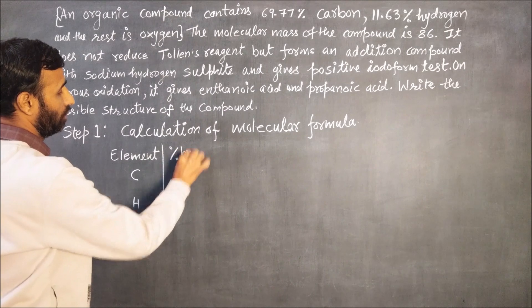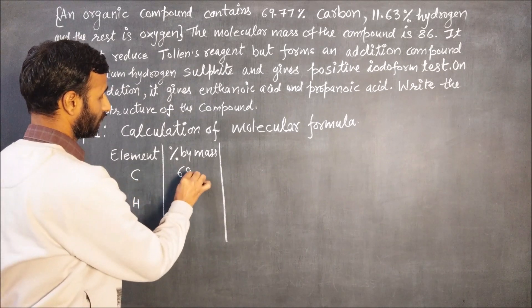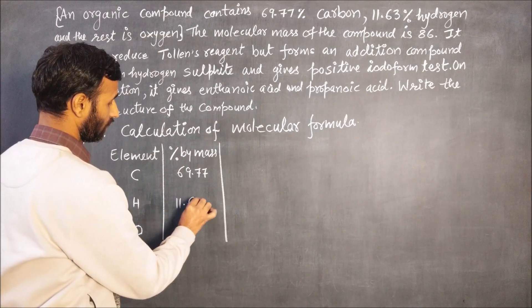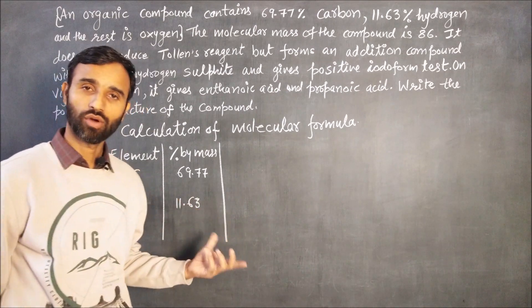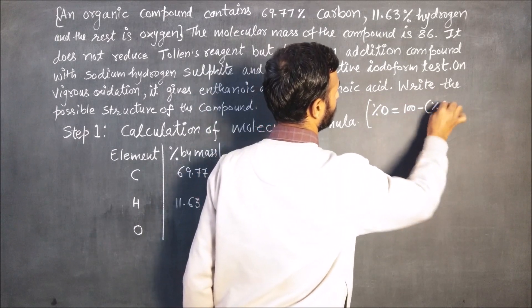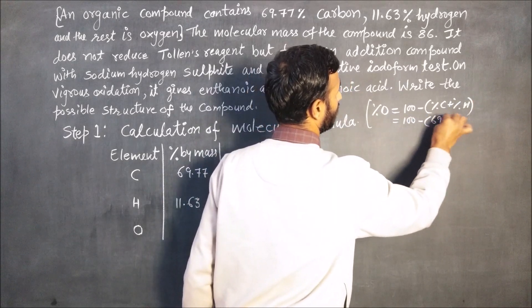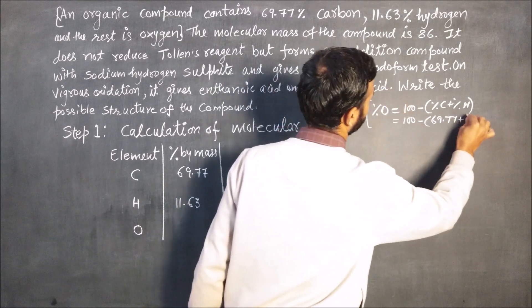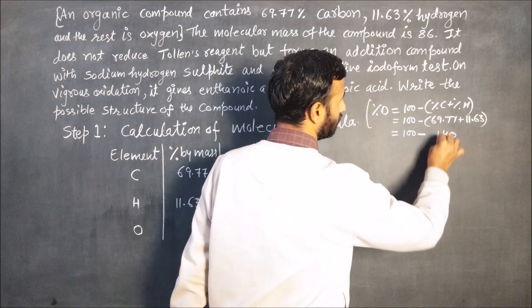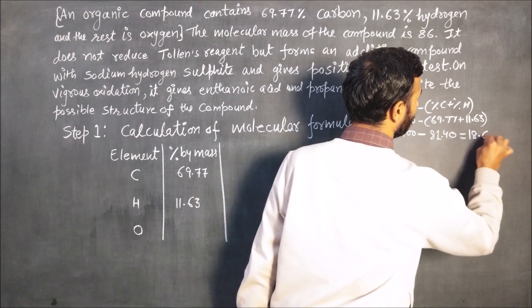Percentage by mass, for carbon it is 69.77%, hydrogen it is 11.63% and remaining is oxygen. So what is percentage of oxygen, that is 100 minus percentage of carbon plus percentage of hydrogen. It is 100 minus 69.77 plus 11.63. So it comes out to be 100 minus 18.60.